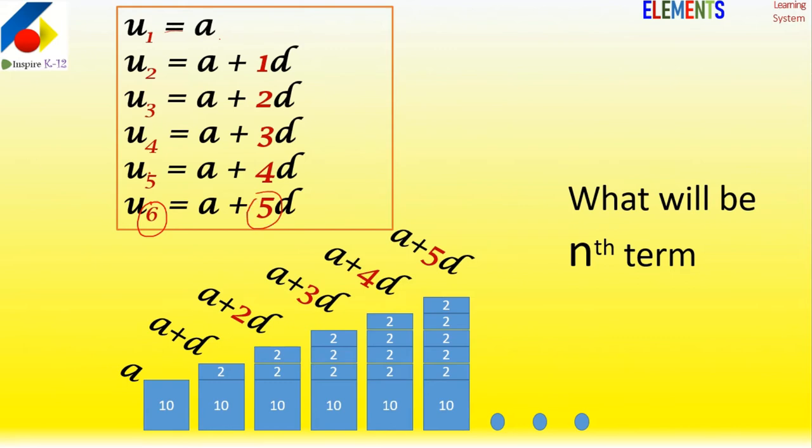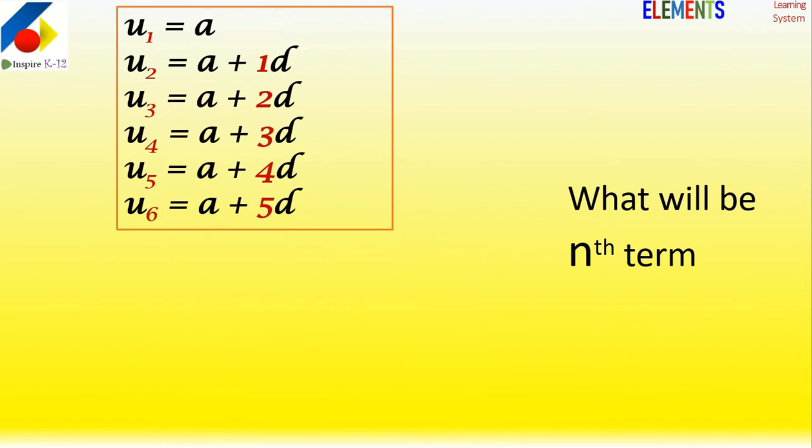If it is the fifth term, we add 4 multiplied by the difference plus the first term. If we look at the first term, it's 0 times d. So if we generalize, it is very simple.